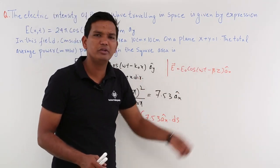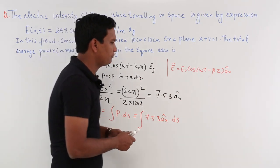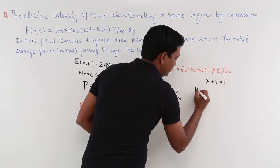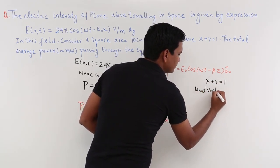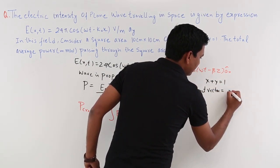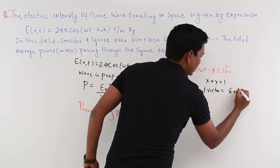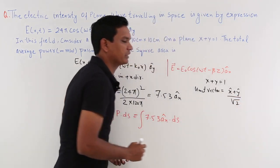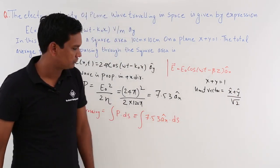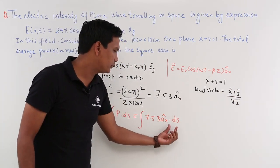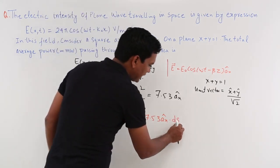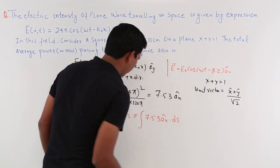How do we find the unit vector of a plane? It is straightforward. For the plane x + y = 1, the unit normal vector is (x̂ + ŷ) / √2. Once we have this unit vector, we just substitute it into the dot product and we are done.